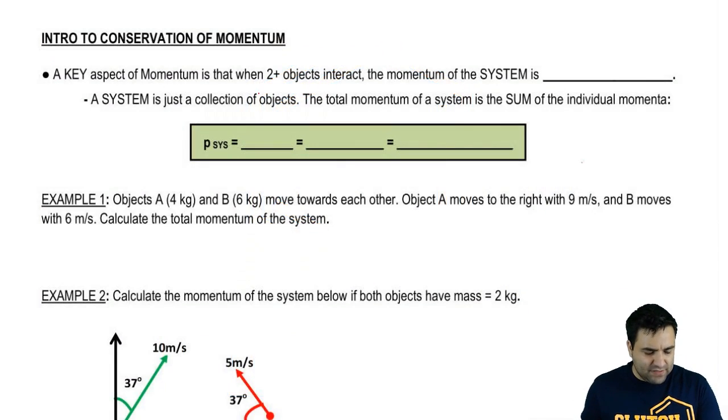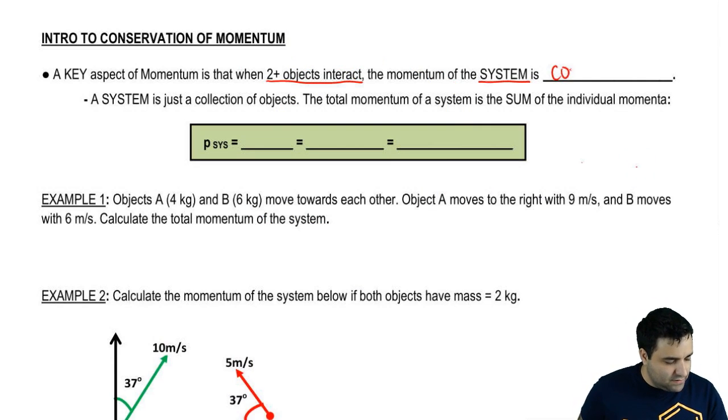As I said, a key aspect of momentum is that when you have two or more objects interacting, it could be a collision or some other form of two-object interaction. The momentum of the system is conserved.